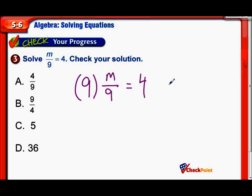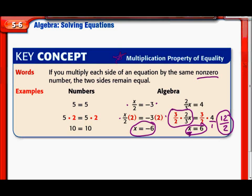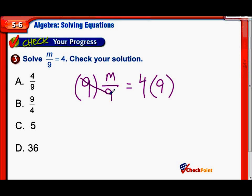So let's multiply both sides of our equation by 9 using that multiplicative property of equality. These two 9s cancel out. We have times 9 divided by 9, they're opposites, they equal 1. And 1 times m is just m. Over here we have 9 times 4, and that's 36. And there's our answer, 36.